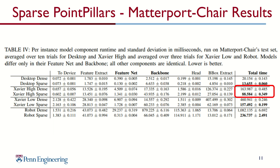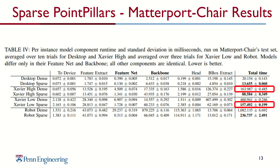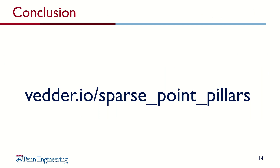For example, Sparse Point Pillars is twice as fast as Point Pillars on the Xavier high-power mode, 3 times faster in low-power mode, and runs faster in low-power mode than Point Pillars in high-power mode. For details, check out our paper along with a full release of all code on our project webpage. Thank you.